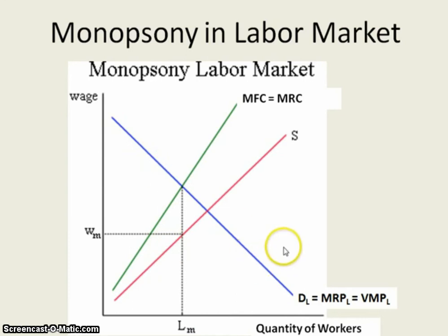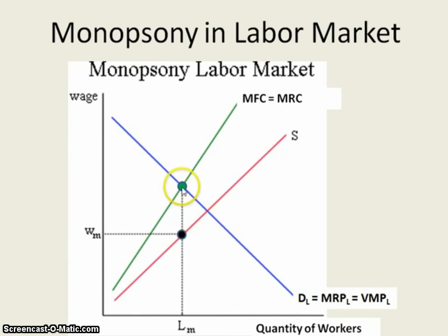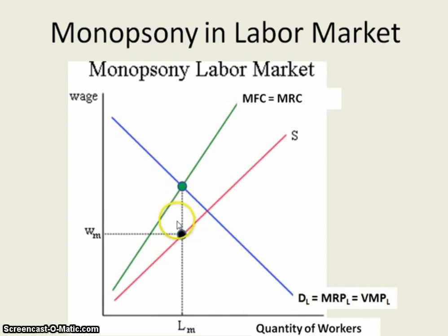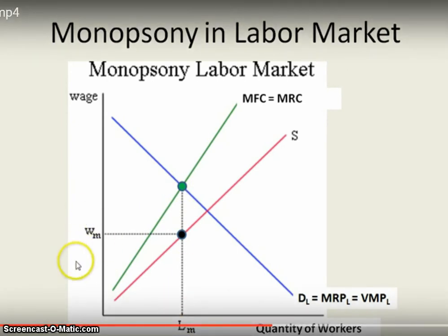We have a downward sloping demand curve where demand equals MRP equals VMP. To find the quantity, go where MRP equals MRC — that gives you the number of laborers hired in this monopsony. The key is figuring out the wage rate: go where MRC equals MRP, then drop down to the supply curve, and that gives you the wage rate. Taking it down to the supply curve is something many students get wrong, so if you remember that, you'll successfully determine both the quantity of resources hired and the wage rate paid.